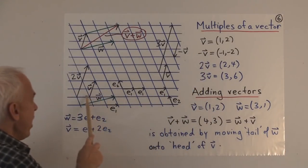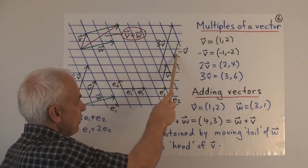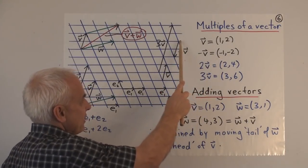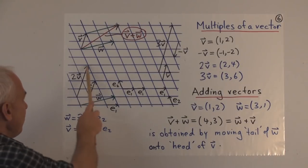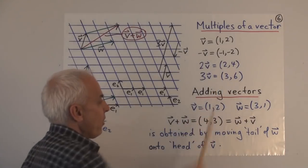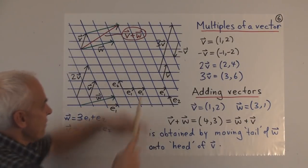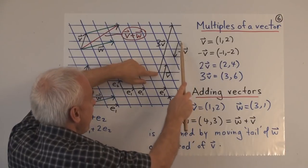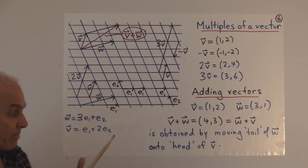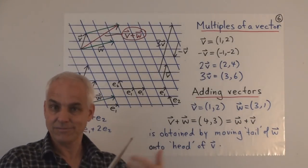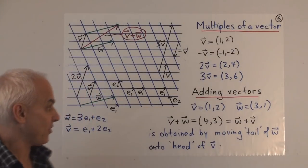Here's 3V — from here to here, that vector is 3V; it's 3 times as long as V in the same direction. Arithmetically, V is (1, 2), so minus V is (−1, −2). The multiple 2V is over 2, up 4 — given by (2, 4) — and you see conveniently that that's exactly what you get by multiplying those coefficients by 2. The vector 3V is (3, 6). Our geometrical understanding of scaling a vector coincides with the natural arithmetical notion of simply multiplying the entries by the corresponding number.